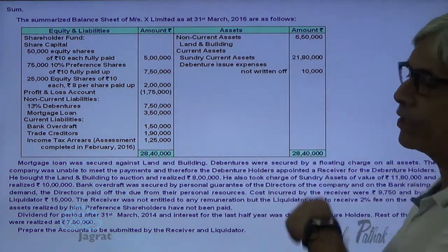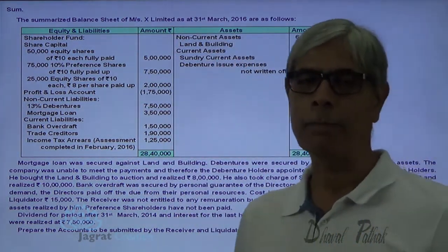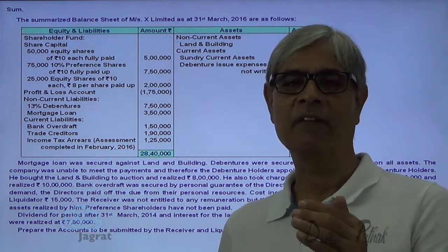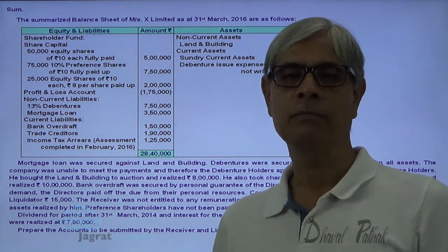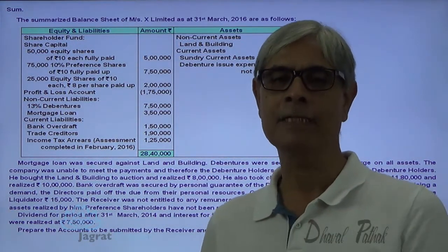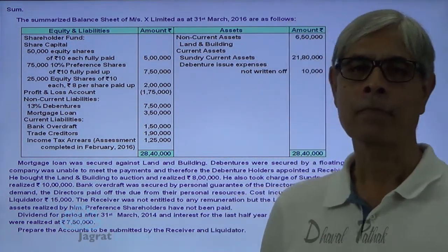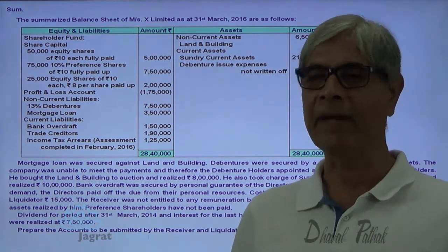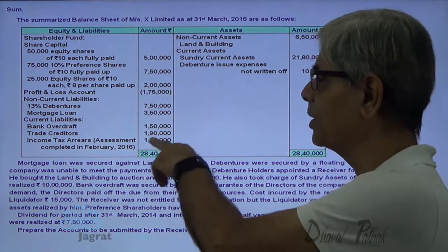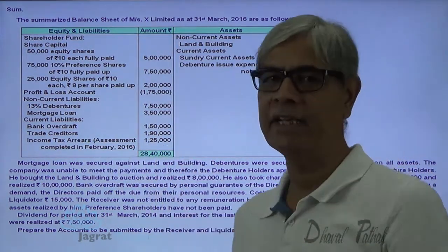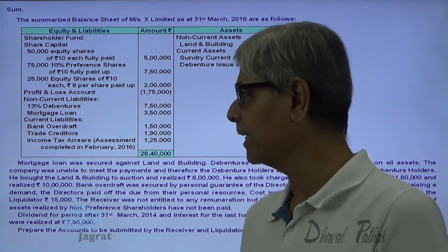The date of liquidation is 31st of March. Government dues have arisen within 12 months before the commencement of winding up, so this income tax arrear is a preferential creditor.